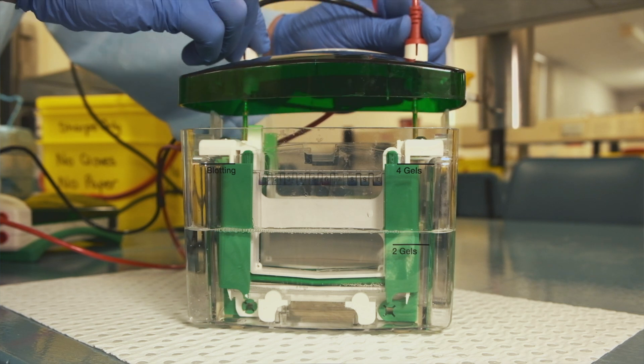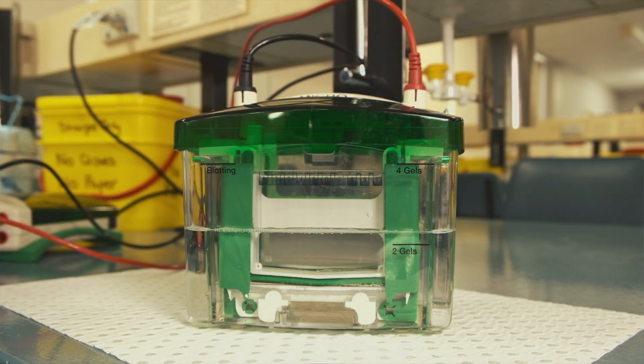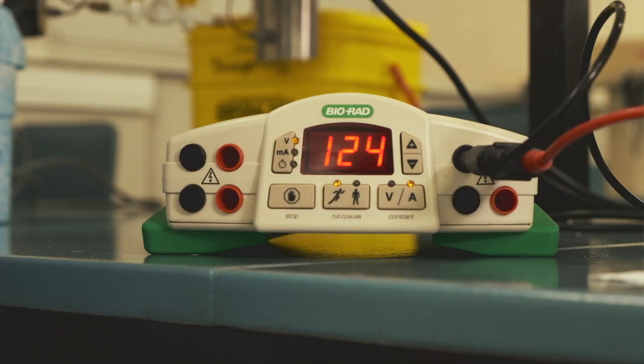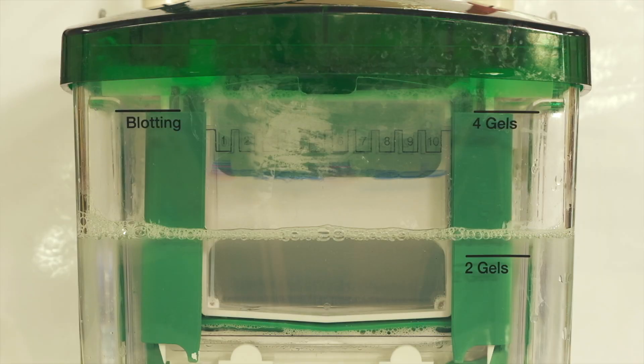Place the lid on the tank, ensuring that the cathode and anode on the tank match those on the lid by checking the colors match. Plug in the connecting cables and run the power at a constant voltage. Depending on the voltage, this gel should take about 30 to 40 minutes to sufficiently separate the proteins in the sample.